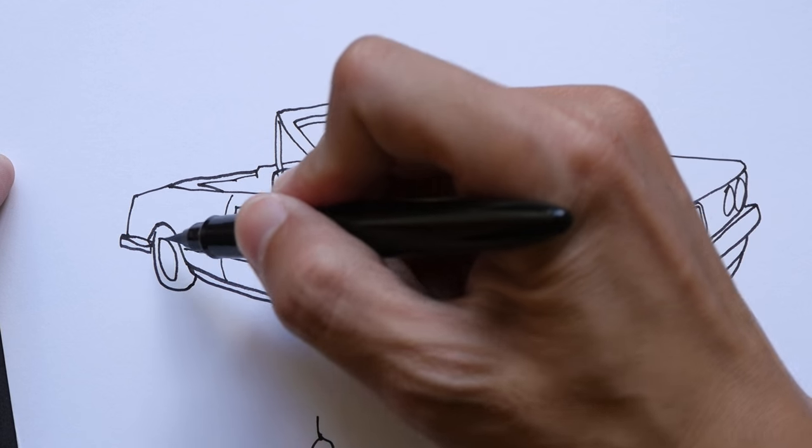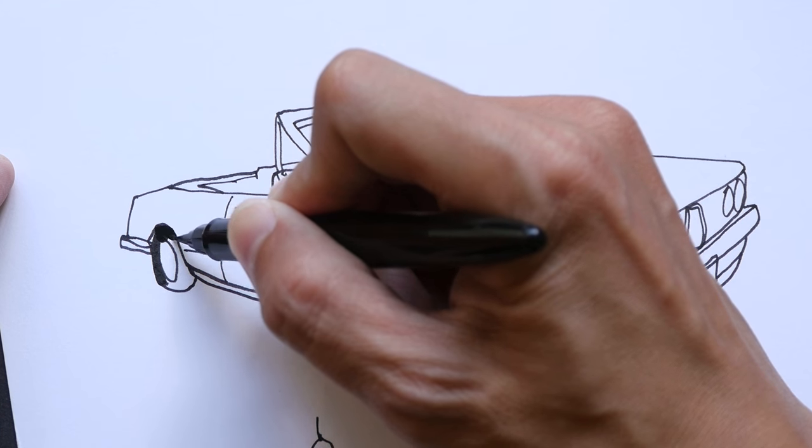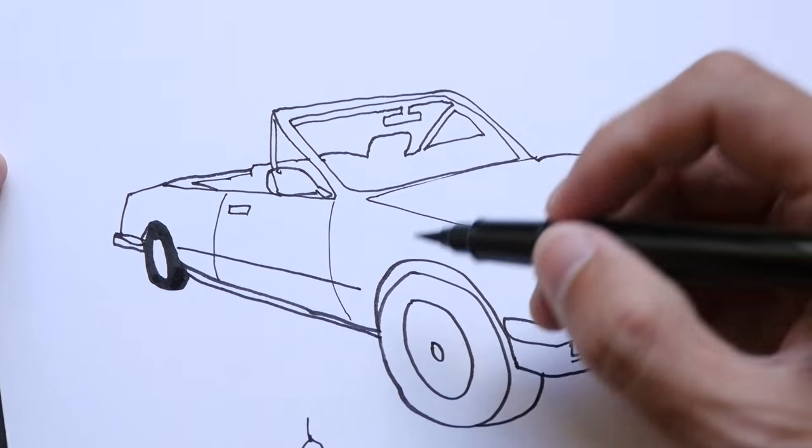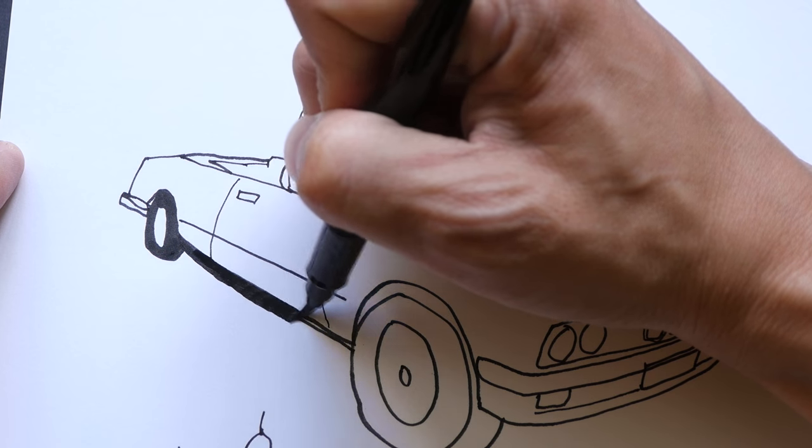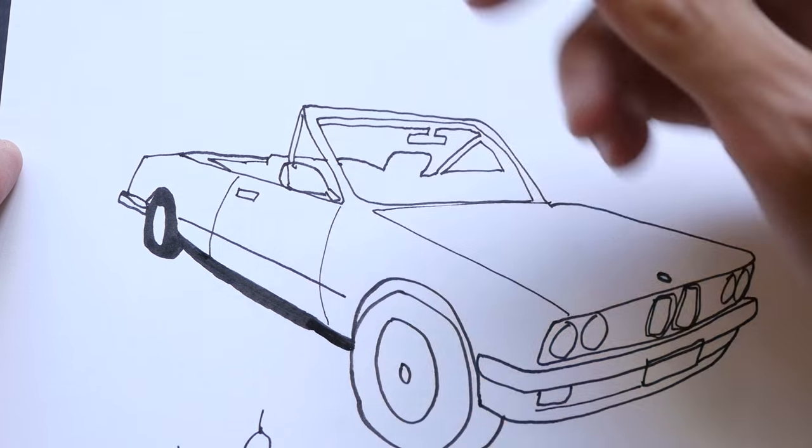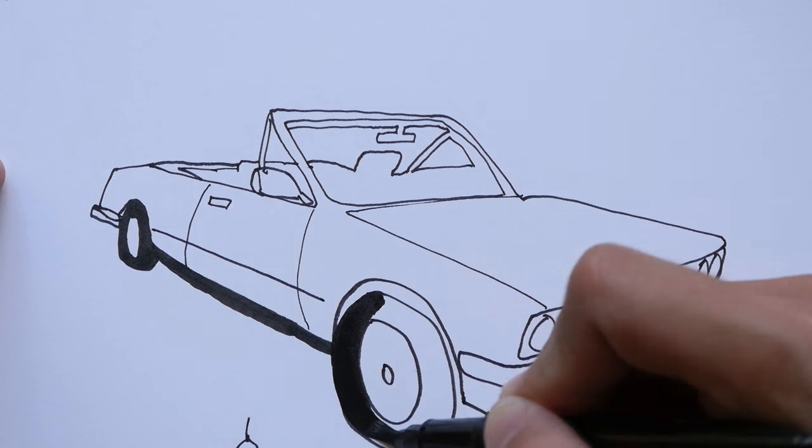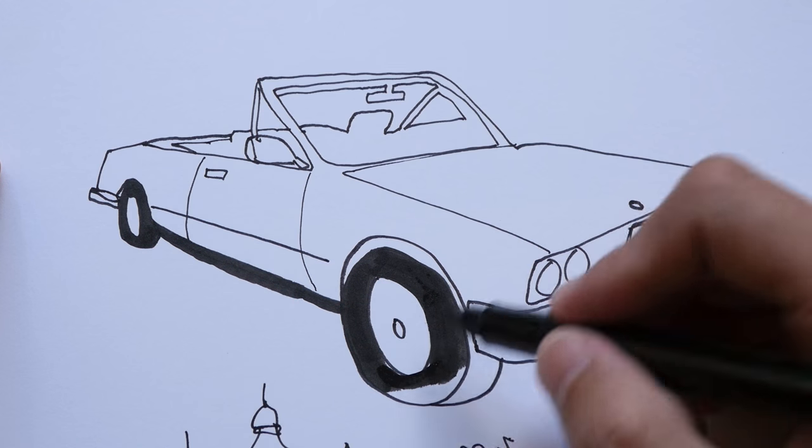The brush pen is very convenient for filling in dark areas. So usually when I draw with pen and ink, if I do not have time for watercolor, I might actually use the brush pen just to shade the shadow areas.